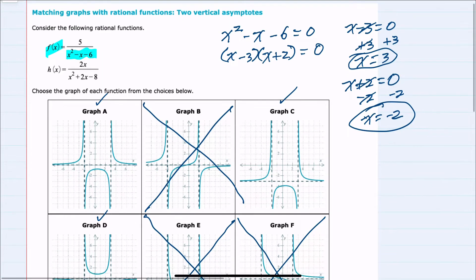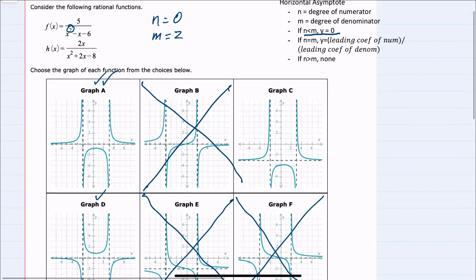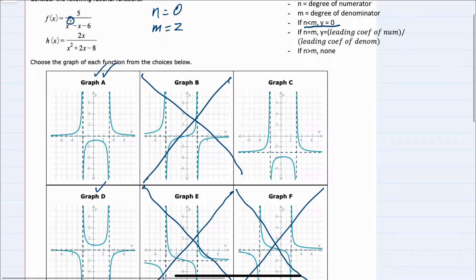Next, we can look at horizontal asymptotes. For horizontal asymptotes, we look at the degree of the numerator, which for f of x is zero, and the degree of the denominator, which here is two. When n is less than m, our horizontal asymptote is going to be y equals zero. So a has a horizontal asymptote at y equals zero. C has a horizontal asymptote at y equals negative three, so not possible.